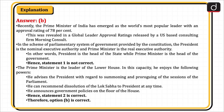In the scheme of parliamentary system of government provided by the Constitution, the President is a nominal executive authority and the Prime Minister is the real executive authority. The President is the head of the state, while the Prime Minister is the head of the government. Hence, statement 1 is not correct. The Prime Minister, as leader of the lower house, advises the President with regard to summoning and proroguing of the sessions of Parliament, can recommend dissolution of the Lok Sabha to the President at any time, and announces government policies on the floor of the house. Hence, statement 2 is correct. Therefore, option B is correct.